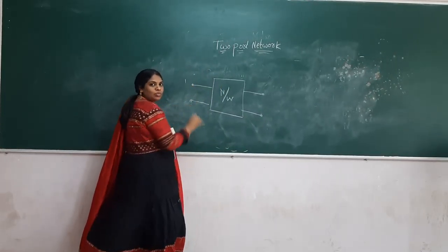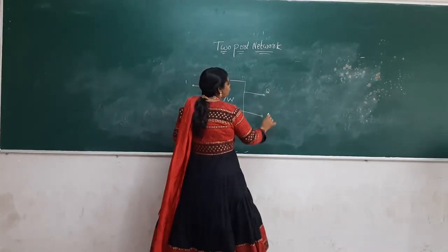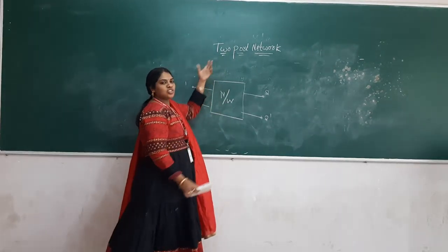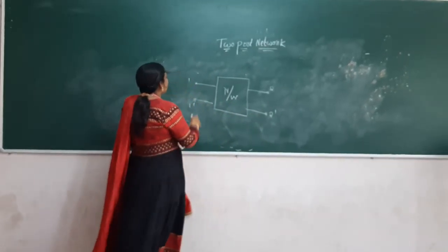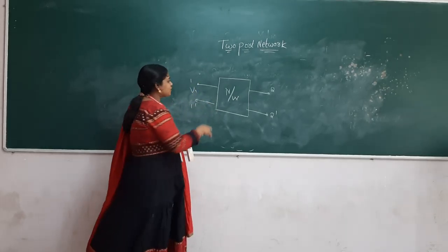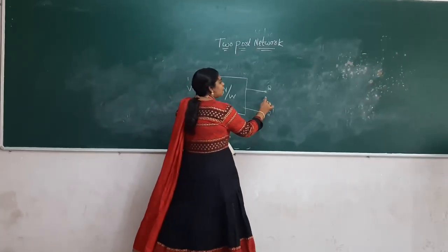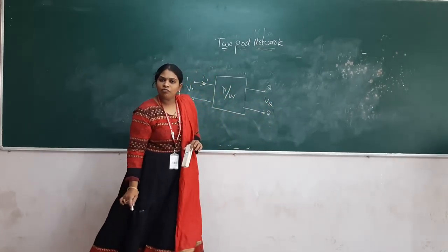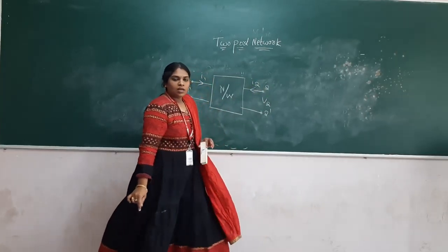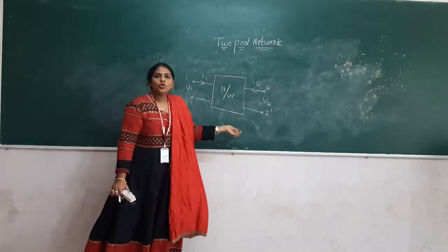The network is represented with a rectangular black box. In a two-port network, we have two pairs of terminals. The first pair of input terminals is labeled 1 and 1-dash, and the second pair is labeled 2 and 2-dash. The first port has voltage V1 and current I1 at the input port, and the second port has voltage V2 and current I2.